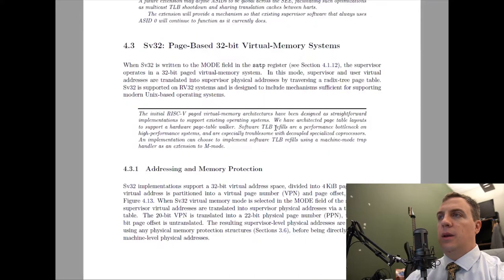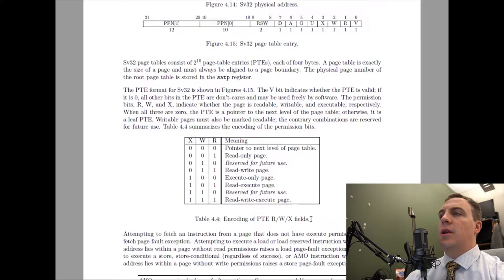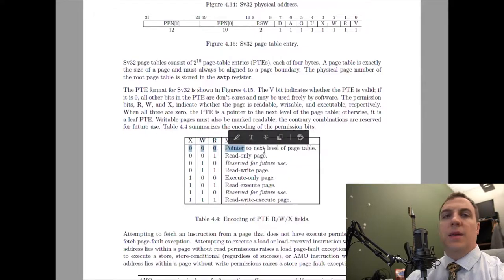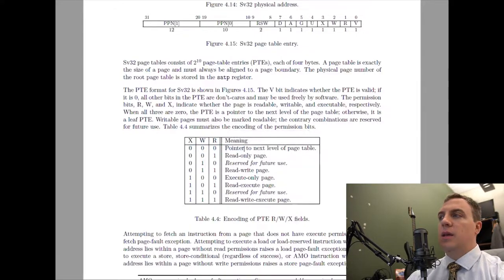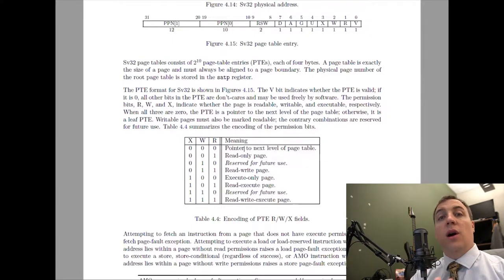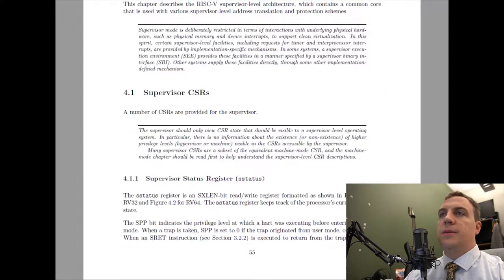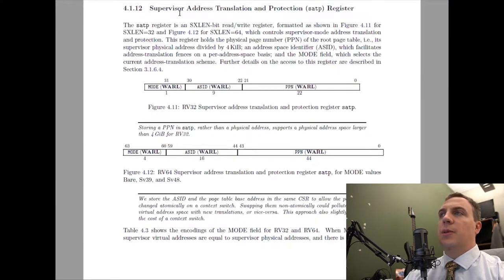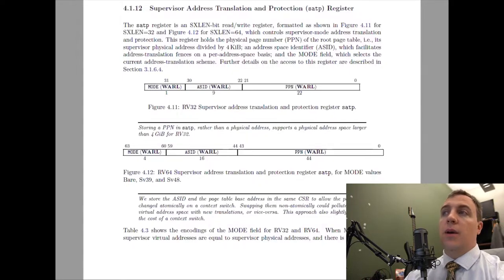The encoding of the R, W, and X bits: if we have all zeros, it means the PPN is a pointer to the next level page table. Looking at how page tables actually work, we start from the root page table. Under supervisor CSRs, there's a particular CSR called SATP — the supervisor address translation and protection register — and this is what gets the whole MMU going.